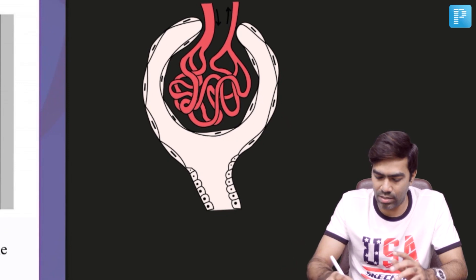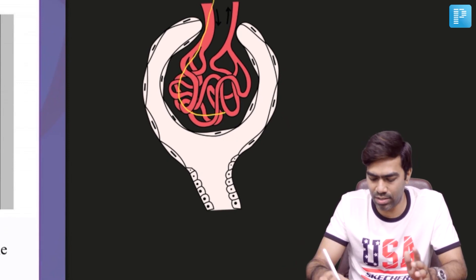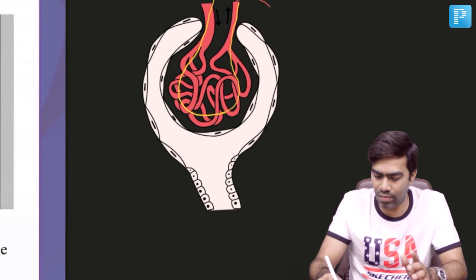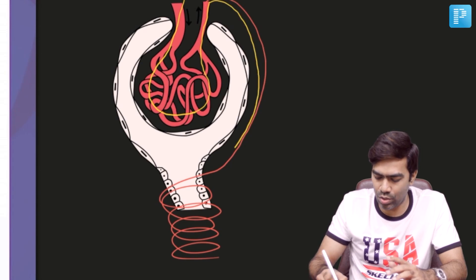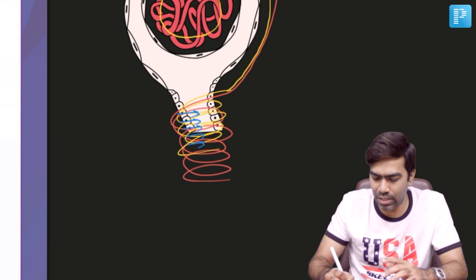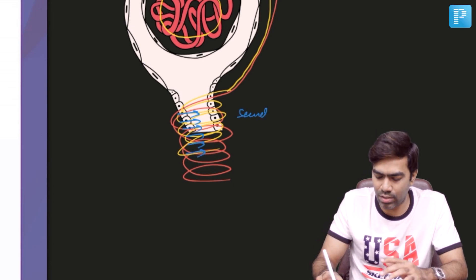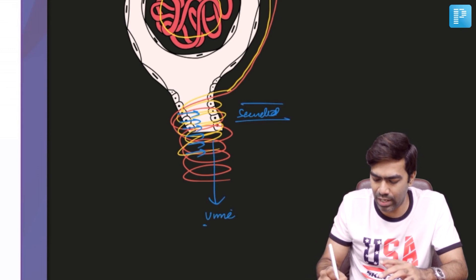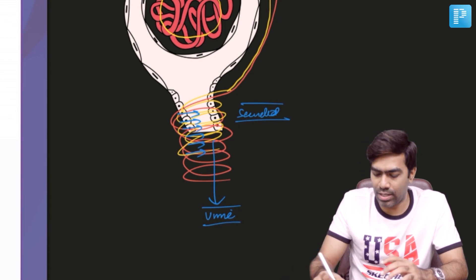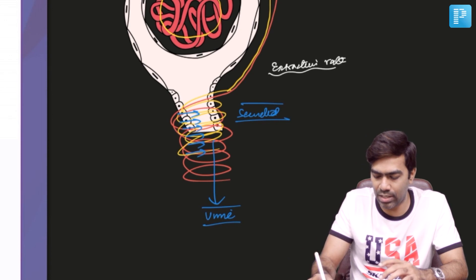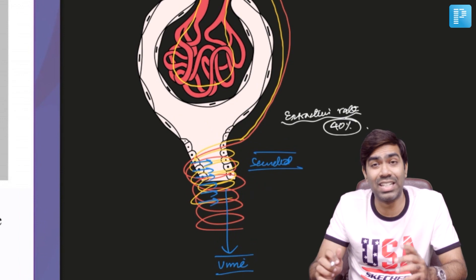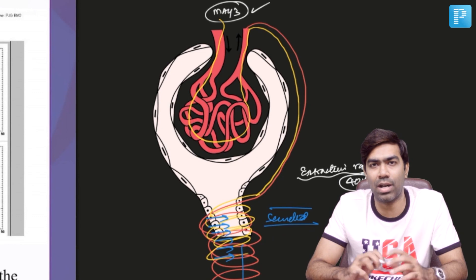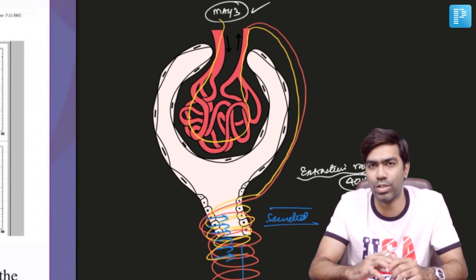MAG3 enters the afferent arteriole, does not get filtered in the early stages, and continues into the peritubular capillary plexus, where it is primarily taken up by proximal convoluted tubular cells and secreted. The primary mechanism of MAG3 elimination into urine is tubular secretion. The extraction rate of MAG3 is approximately 40% — twice that of DTPA. Because MAG3 elimination is not dependent on GFR, it is very useful for assessing split renal function in patients with poor GFR where DTPA would not be useful.